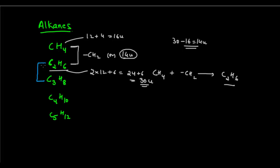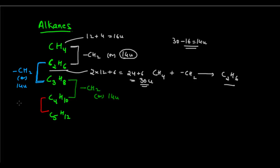Let's look at C2H6 and C3H8 — again there is a difference of one CH2 unit, because adding CH2 gives C3H8, and again a mass difference of 14U. Similarly for C3H8 and C4H10, and for C4H10 and C5H12, there is a difference of one CH2 unit and a mass of 14U each time.